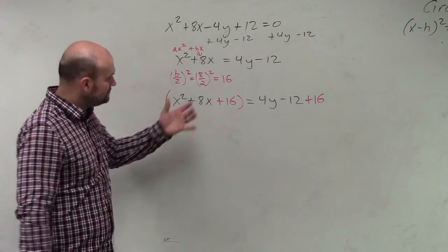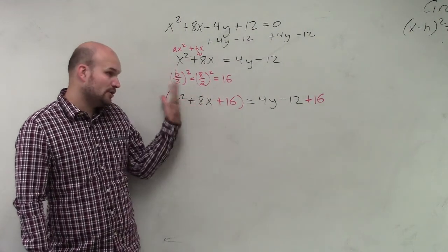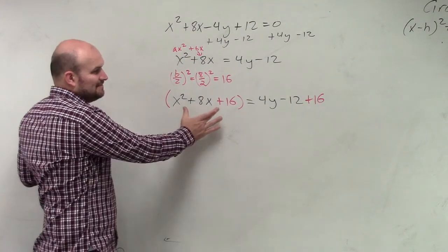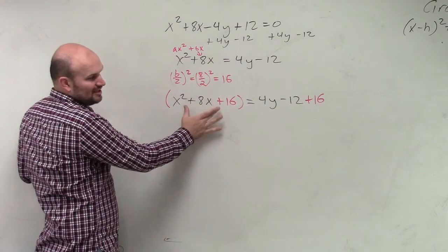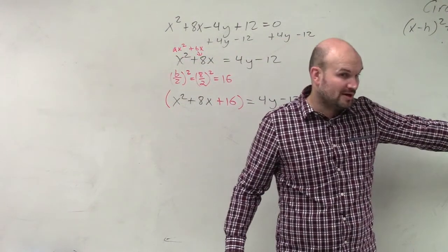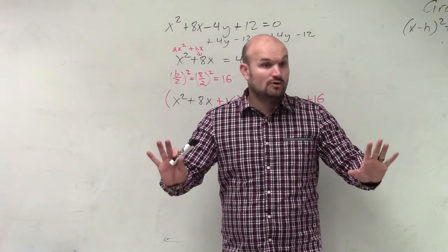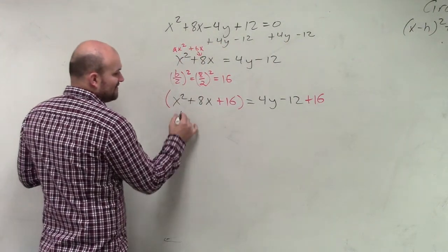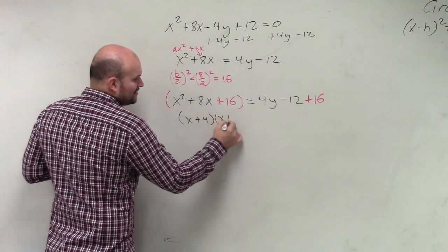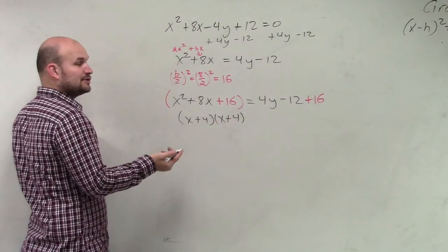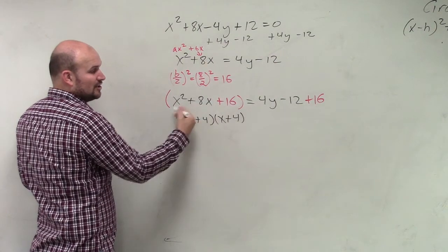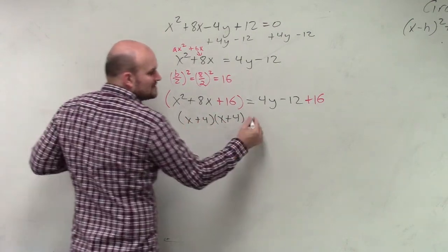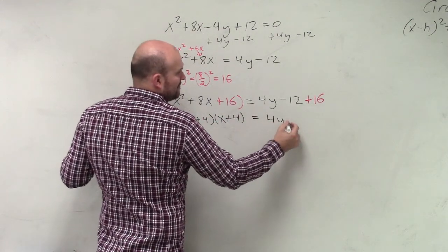So the reason why I did that is now what I have created is what we call a perfect square trinomial. So what's nice about a perfect square trinomial is this can be factored. Every single perfect square trinomial can be factored into what we call binomial squared. So I'm going to do this one slowly. And then for the next two, I'm going to just put them as binomial squareds. But this can be factored into (x + 4)(x + 4). So therefore, this becomes 4y + 4.